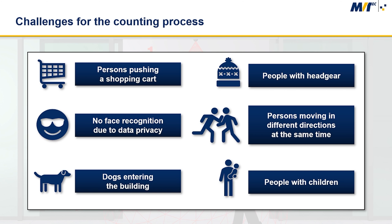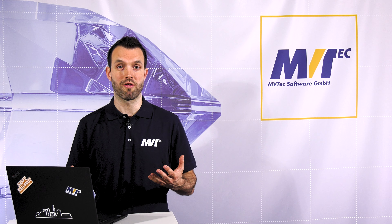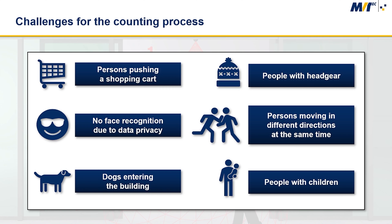There were a number of challenges that needed to be tackled. For example, the system had to deal with people pushing shopping carts and people wearing headgear. Also, no face recognition was allowed due to data privacy reasons. Another challenge was persons moving in different directions at the same time, dogs entering the building, and people accompanied by children.